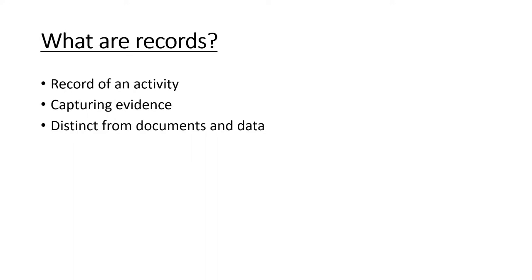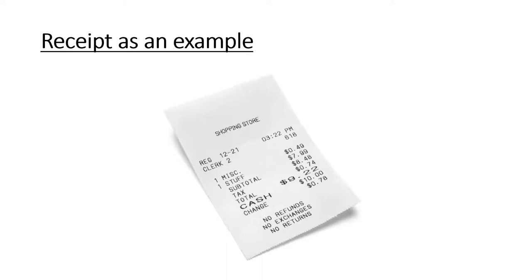Records have some sort of uniqueness that documents don't have. Another example might be a receipt — a receipt would have clear, identifiable, factual information that captures an event which took place, presumably capturing evidence of some exchange of money for a good or service. The paper the receipt was printed on might be seen as a document, and individual pieces of information such as the date and numerical figures could be seen as data, but the receipt becomes a record when all these things are combined.